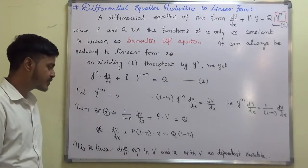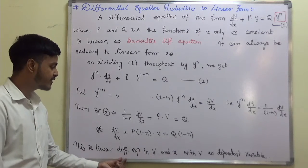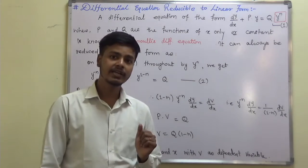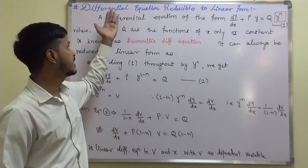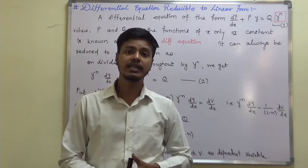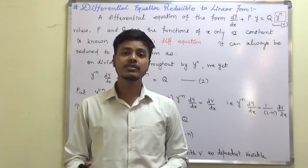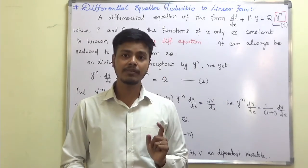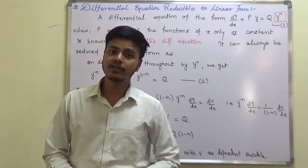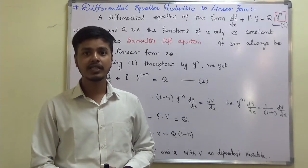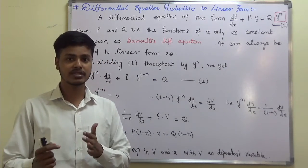The working rule is straightforward. Step 1: convert or reduce the given equation into linear form. Once you have the linear form, find the integrating factor. Once you have the integrating factor, find the general solution. Simple.